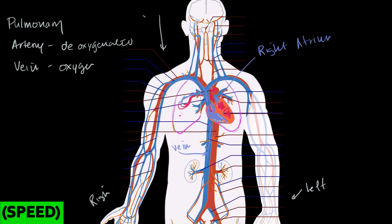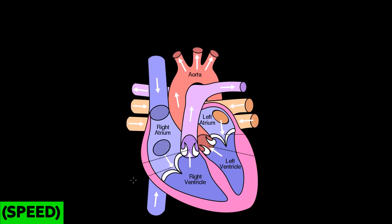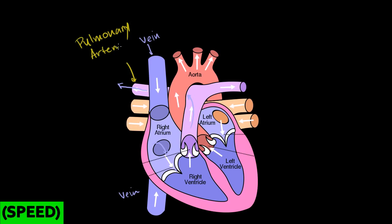The left ventricle pumps oxygenated blood to the rest of the body via non-pulmonary arteries. The superior vena cava brings blood from the upper body — arms and head — and the inferior vena cava brings blood from the abdomen and legs. It all enters the right atrium. The right ventricle pumps that deoxygenated blood to the lungs via the pulmonary artery, which is deoxygenated.